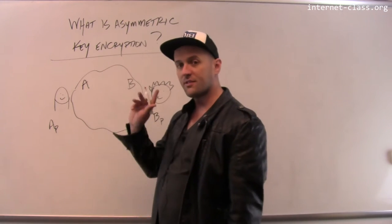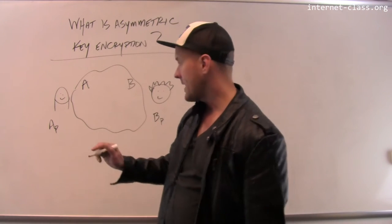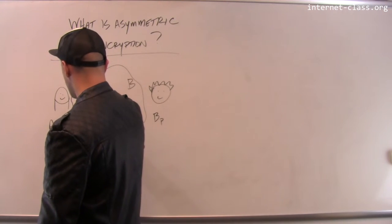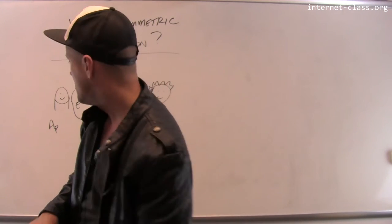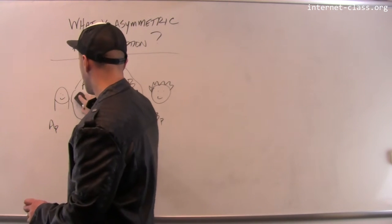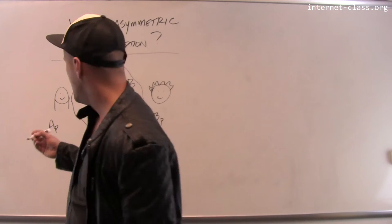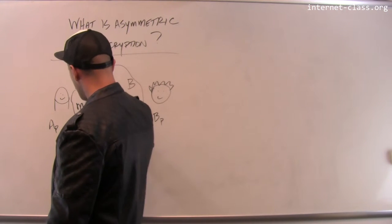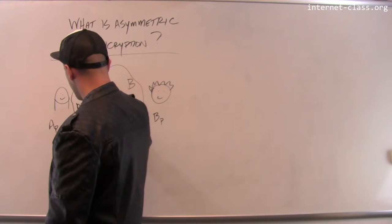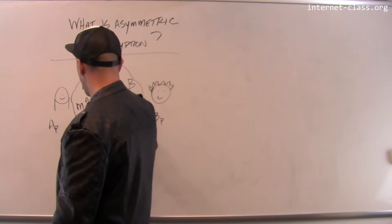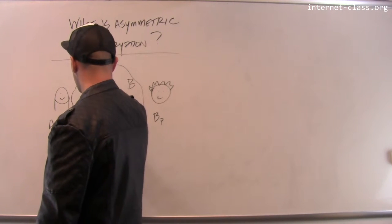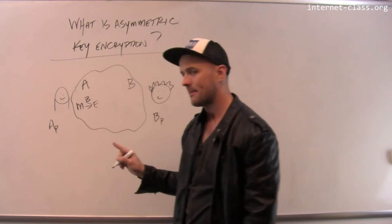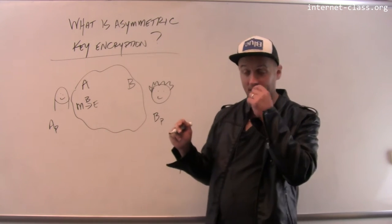In order to send a message to Bob, Alice takes the plain text message and encrypts it using Bob's public key. That produces an encrypted message.